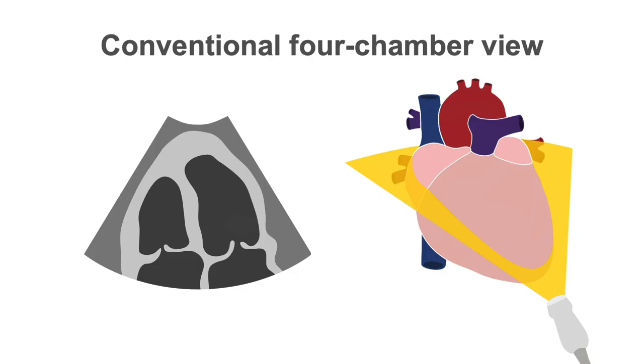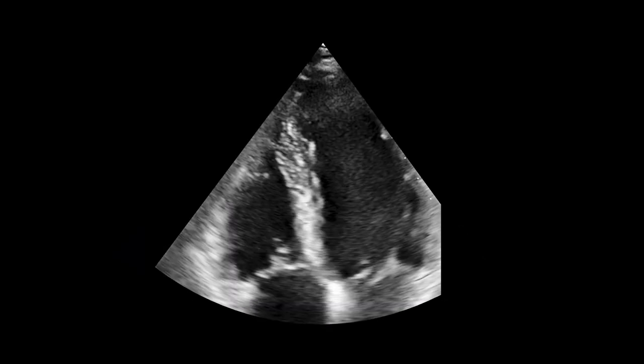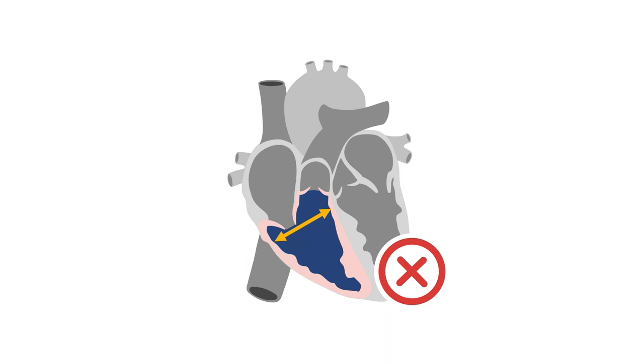There is also the option of the conventional four-chamber view where you focus on the left ventricle, maximize the left ventricular diameter and acquire the image. In this view, the right ventricle diameter measures 3.18 cm, but this does not dissect the right ventricle at its maximum diameter.